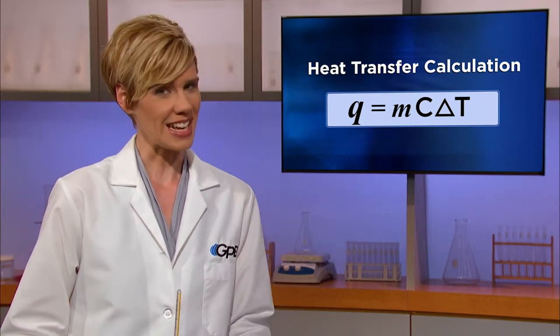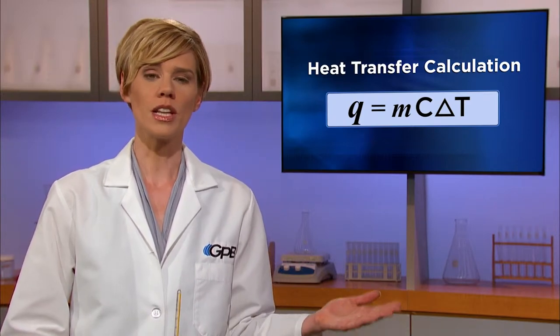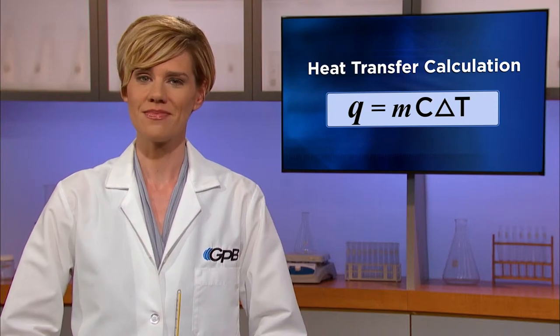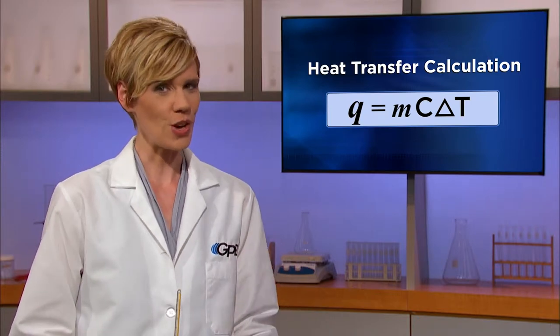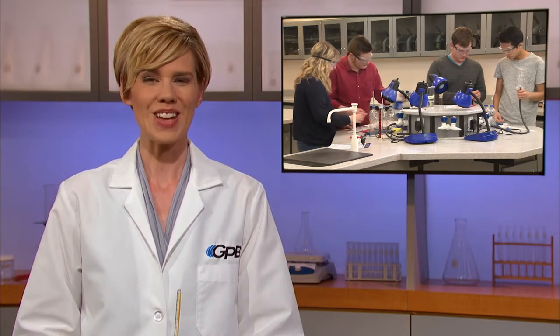In the first video of this unit, we learned that some hand warmers and cold packs involve heat transfer that's initiated by dissolving ionic compounds in water — sometimes the dissolving process is endothermic, and sometimes it's exothermic. In the second segment, we learned the formula Q equals MC delta T, which is used to calculate the quantity of heat transferred during a process. And in the third video on the playlist, we learned that the specific heat capacity of solids, liquids, or gases determines how easily they will change temperature when heated. So now let's head back to our classroom to learn more about our thermochemistry challenge.